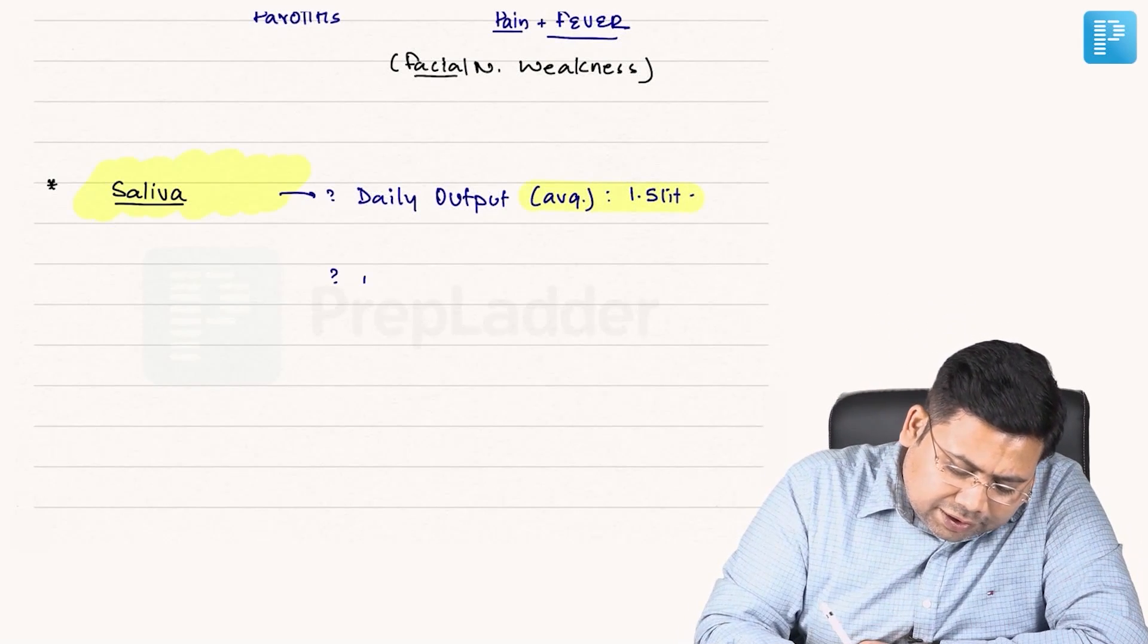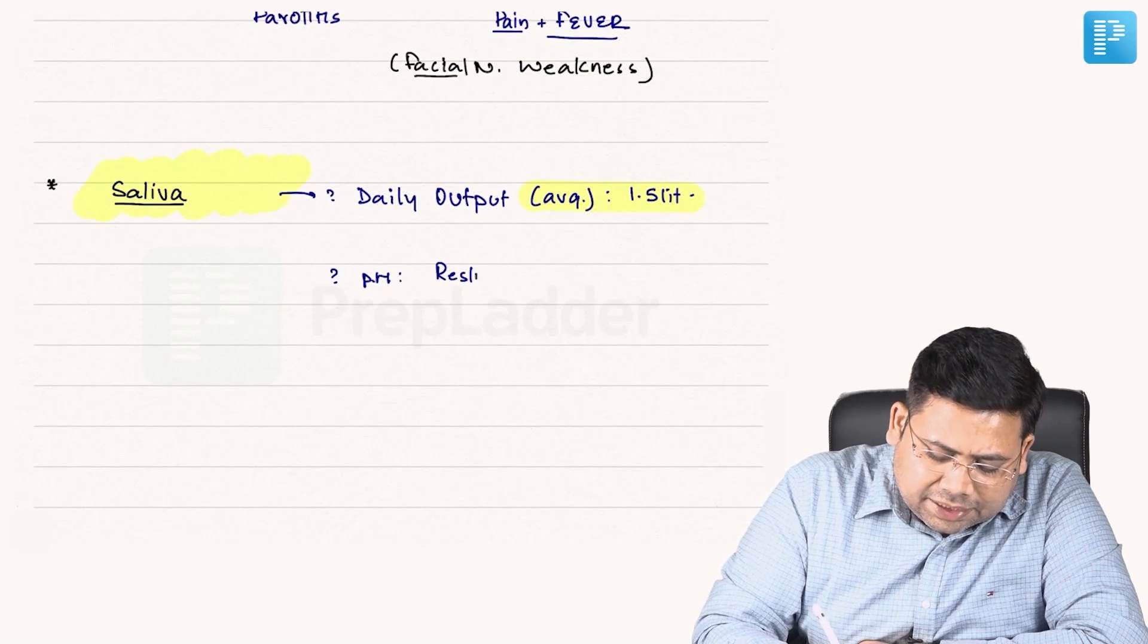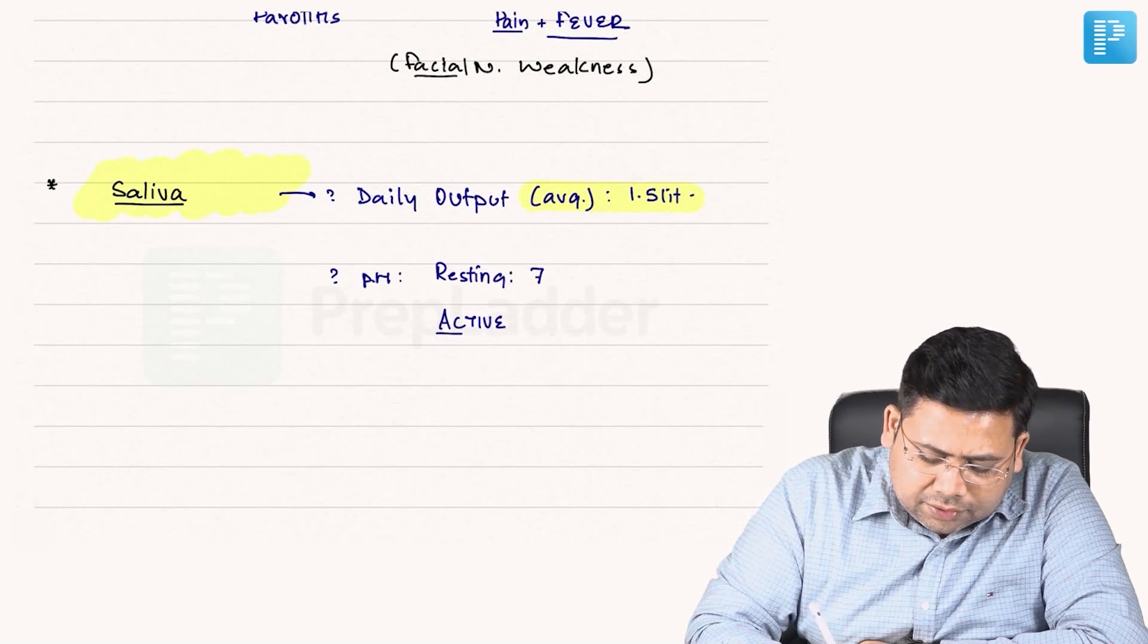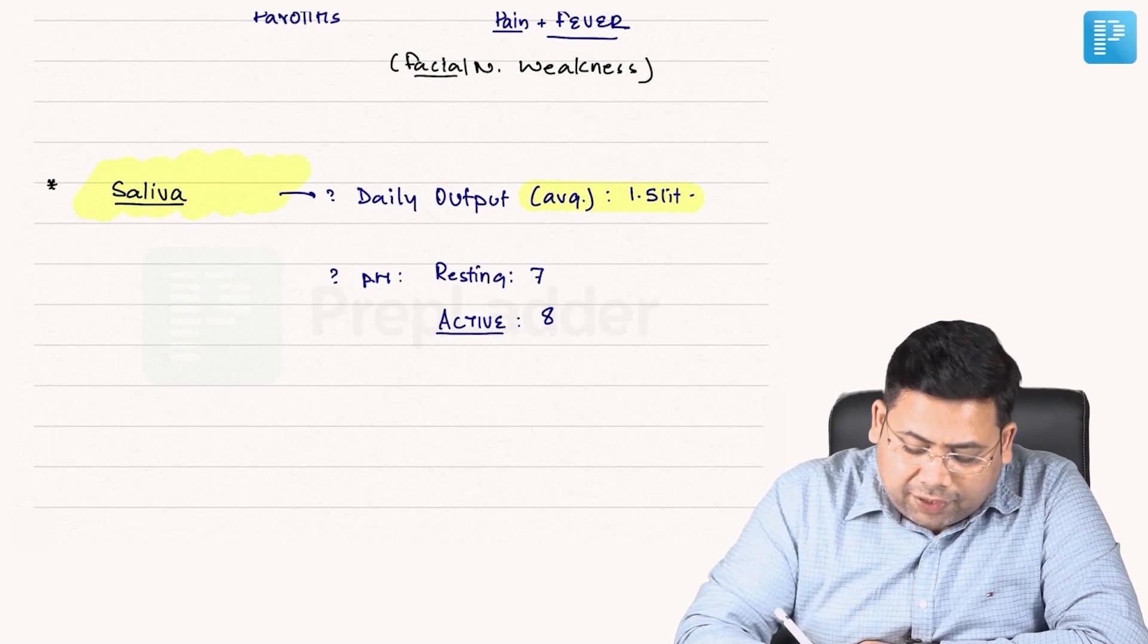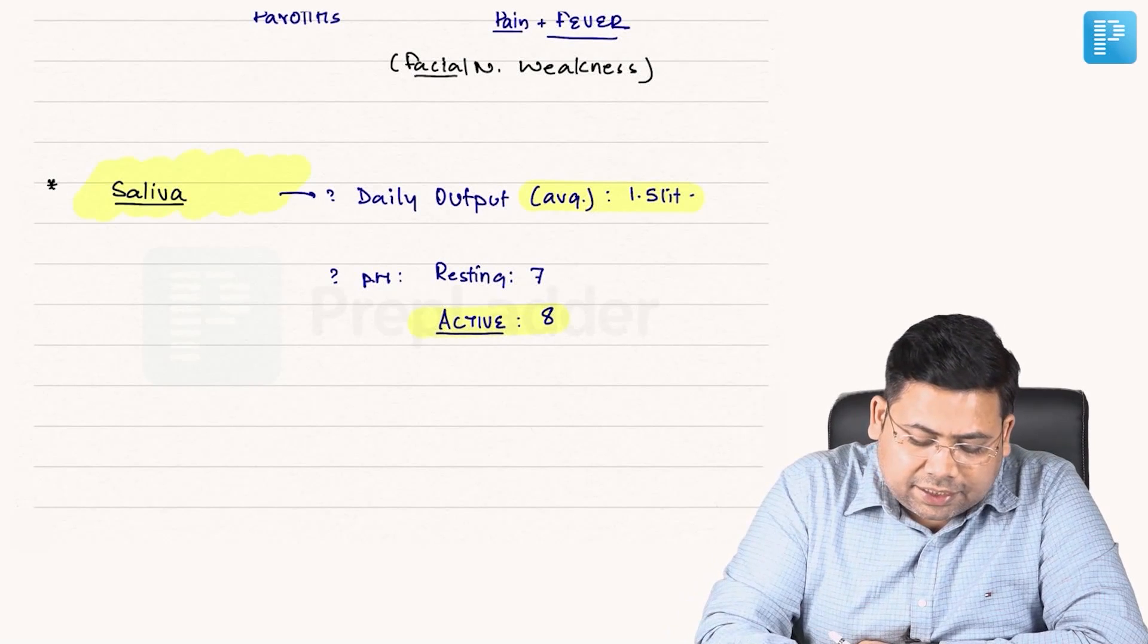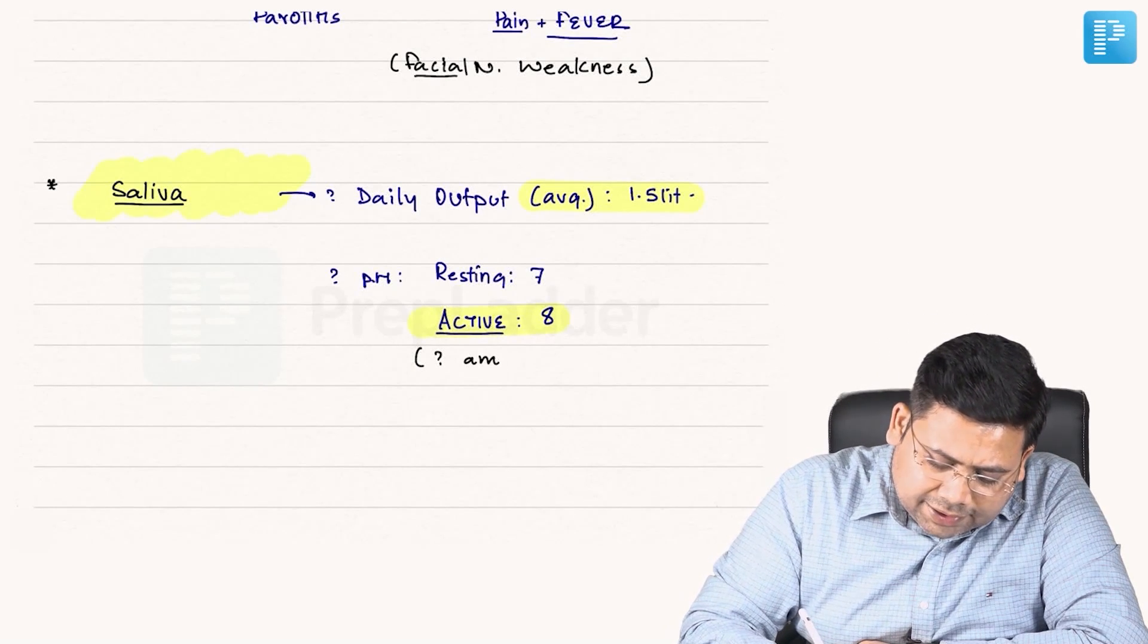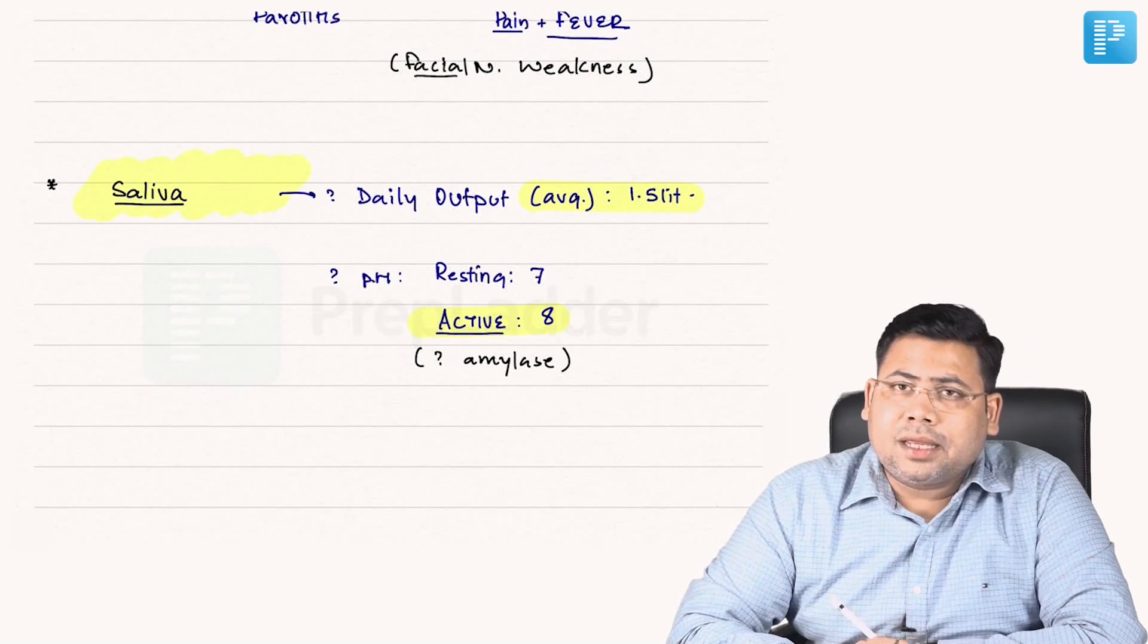When we talk about average daily output, it is somewhere around 1.5 liters. So average daily output is 1.5 liters. Then let us talk about the pH. The pH at resting condition is 7. At the pH of active saliva, the pH of active saliva is 8.